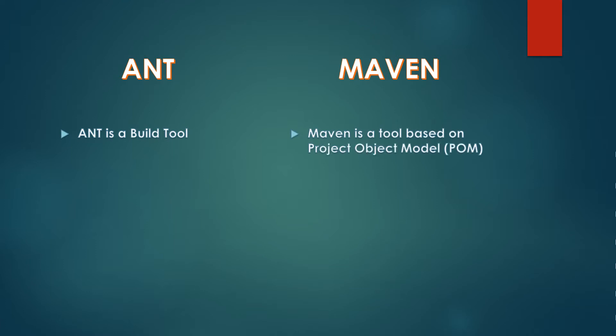Firstly, Ant was just used as a build tool, whereas Maven is more than just a build tool — it is a complete project management tool. Build.xml is the important file which specifies all the actions that should be taken in Ant, but in Maven we have a file called pom.xml in which all the declarations are made. I will explain all about pom.xml in a separate video, and the link has been given in the description box.